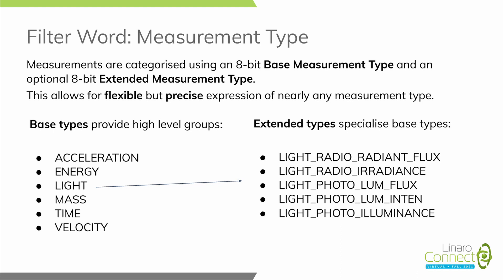These base types can then be specialized using a secondary 8-bit field called the extended measurement type, allowing you to express far more precise types of telemetry data. For example, with the light base measurement type, we can specialize it into radiometric units like radiant flux and irradiance, or photometric units like luminous flux, luminous intensity, and illuminance. Each combined base plus extended type can have its own SI units, scale, and default values. With 16 bits of data total, we can have an extremely rich representation of telemetry data without painting ourselves into a corner.